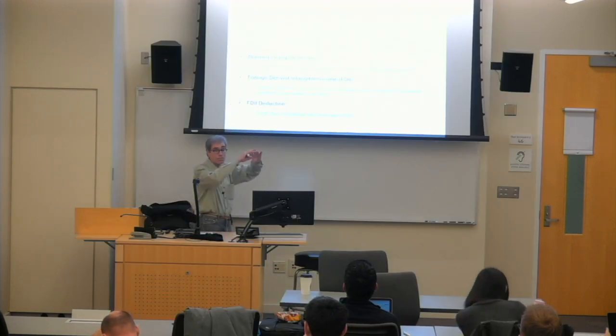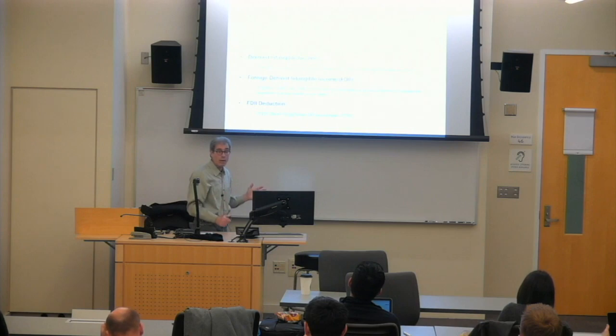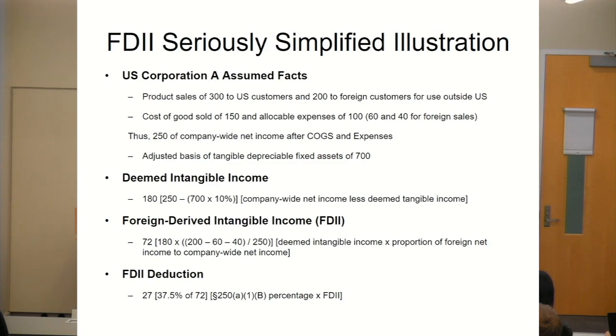Because that's total, on total sales both into the U.S. and to customers overseas, we then have to calculate how much of that 180 will be the foreign-derived intangible income. We just make a simple proportion. We multiply that 180 times the proportion of net income which is attributable to foreign, over the total, and we come up with a number, which in this case is 72.